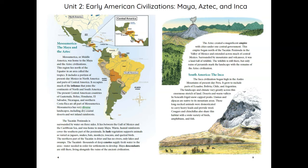Mesoamerica has very diverse landscapes, including dry coastal deserts and wet inland forests. The Yucatán Peninsula is surrounded by water on three sides, lying between the Gulf of Mexico and the Caribbean Sea, and was home to many Maya. Warm, humid rainforests cover the southern part of the peninsula, with lush vegetation supporting animals as varied as jaguars, snakes, bats, monkeys, toucans, and quetzal birds. The northern part is drier and has no rivers, only lakes and swamps. The Yucatán's thousands of deep cenotes supply fresh water needed for settlements to develop. Maya descendants are still there, living alongside the ruins of the ancient civilization.